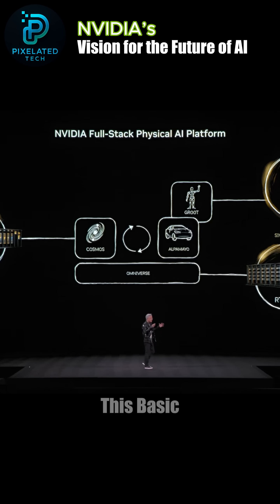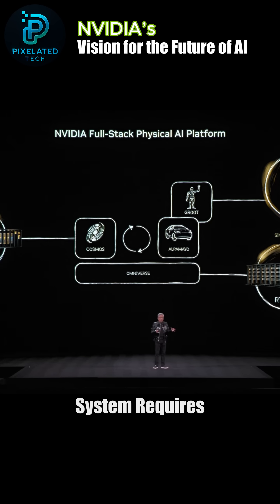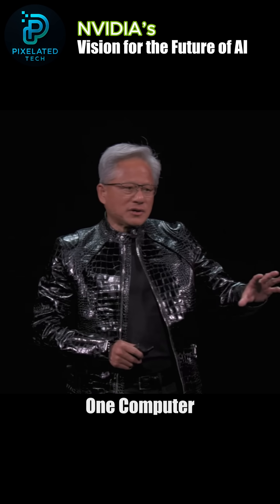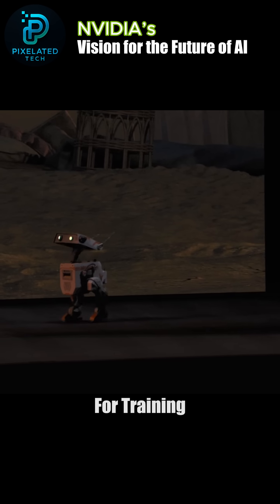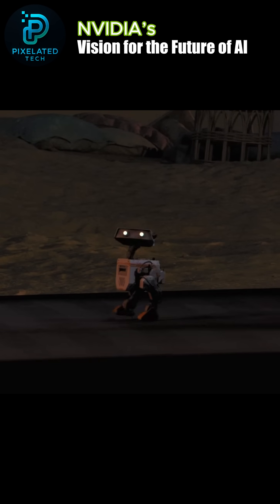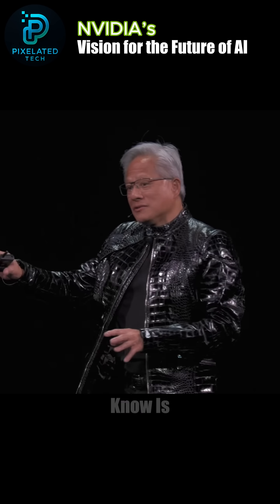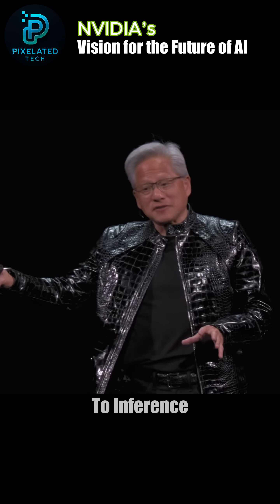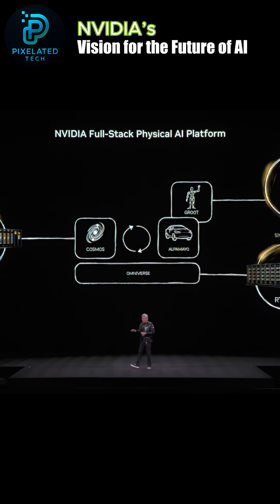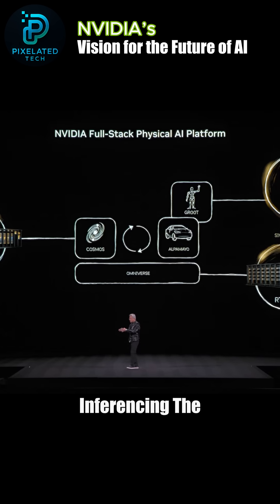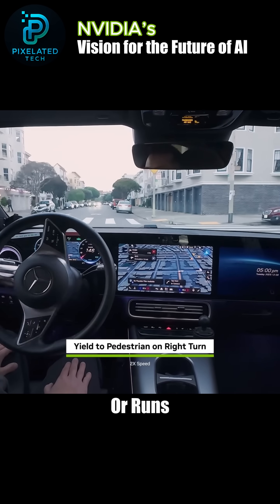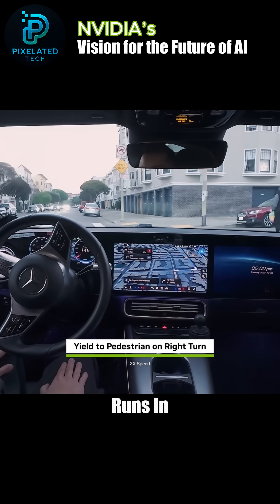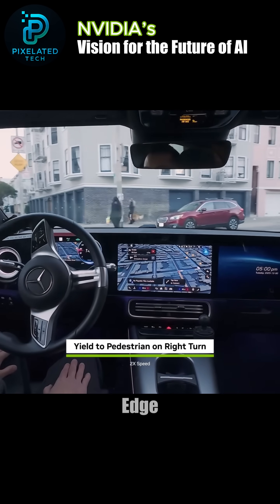This basic system requires three computers. One computer, of course, is the one that NVIDIA builds for training the AI models. Another computer is used to inference the models. Inferencing the model is essentially a robotics computer that runs in a car, or runs in a robot, or runs in a factory — runs anywhere at the edge.